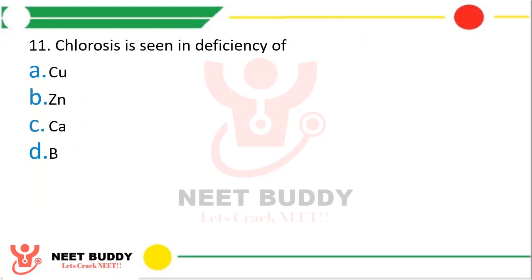Question 11: Chlorosis is seen in deficiency of? Option A, copper. Option B, zinc. Option C, calcium. Option D, boron. The correct answer is Option B — zinc. Chlorosis is the loss of chlorophyll, which leads to yellowing of the leaf. Other elements that cause chlorosis include nitrogen, potassium, magnesium, sulfur, iron, manganese, and molybdenum — all of these, if deficient, will lead to chlorosis.